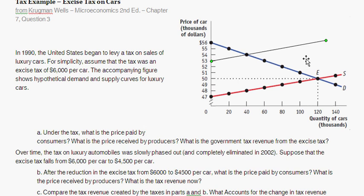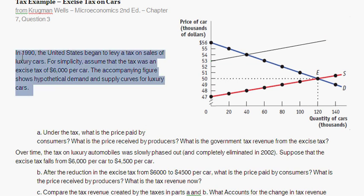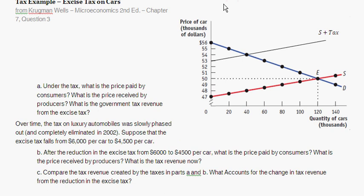Since this is an excise tax and I shifted up the supply curve, you might wonder: why didn't I shift the demand curve inward instead? You'll get the same result either way — you choose one or the other. If the tax is framed as a tax on consumers, you shift the demand curve. If it's framed as paid by suppliers, you shift the supply curve up. Since this question doesn't make it clear, I'm shifting whichever is easier.